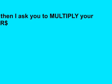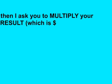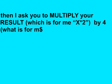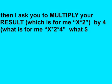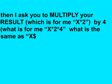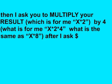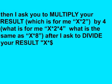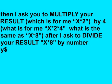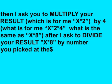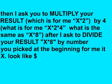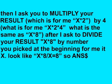Then I ask you to multiply your result — which is, for me, x multiplied by 2 — by 4. What is x multiplied by 2 multiplied by 4? That is the same as x multiplied by 8. After, I ask to divide your result by the number you picked at the beginning, which for me is x. It looks like x multiplied by 8 divided by x, which equals 8.